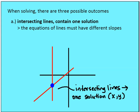Let's talk about the possible outcomes when we have two lines. In solving, there are three possible outcomes. The first is if I have two lines on a plane — you can represent this by taking two rulers and placing them on a flat surface, extending them indefinitely in both directions. They're either going to intersect at some point, in which case there would be one solution. If two lines have different slopes, you end up with two intersecting lines that have one solution.